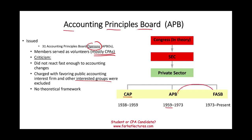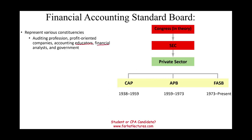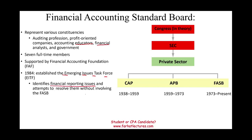The Accounting Principles Board was eventually replaced by FASB — the Financial Accounting Standards Board — starting in 1973. FASB represents various constituencies: not just CPAs and accountants, but auditors, profit-oriented companies, not-for-profit organizations, educators, financial analysts, government, and more. It has seven full-time members and is supported by the Financial Accounting Foundation. In 1984, to react quickly to industry changes, FASB created the EITF — Emerging Issues Task Force — which identifies financial reporting issues and resolves them without involving FASB directly.